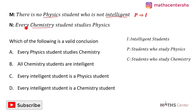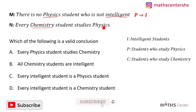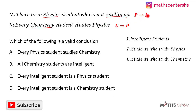The second statement is: every chemistry student studies physics. I use C to represent chemistry students and P to represent physics students. Every chemistry student studies physics, so it means that if someone belongs to C, it implies that the person belongs to P. So C implies P. Based on these two statements we have established that P implies I and C implies P.